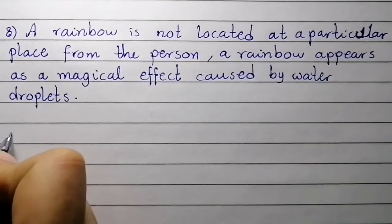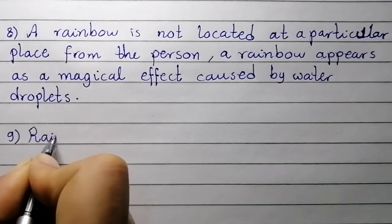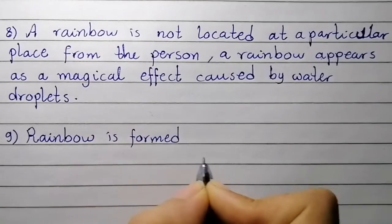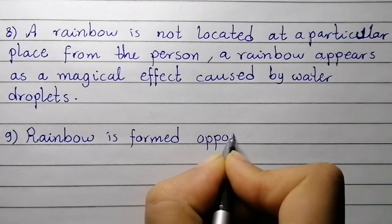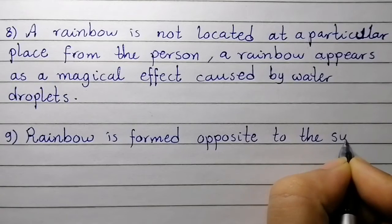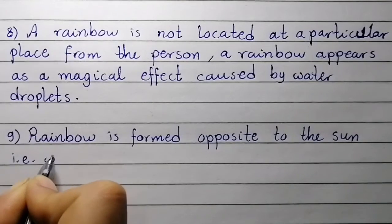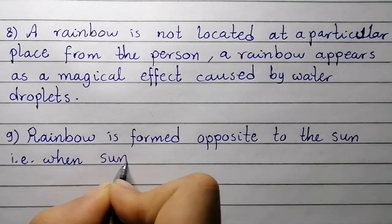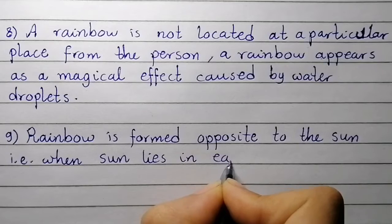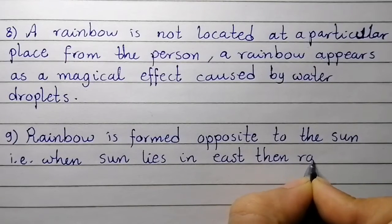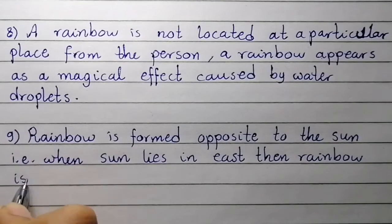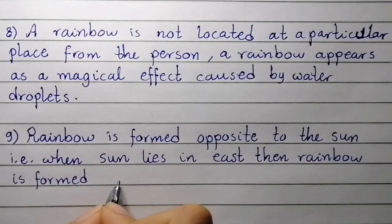Point number nine: a rainbow appears opposite to the sun. For example, when the sun lies in the east, then the rainbow is formed in the west, and vice versa.